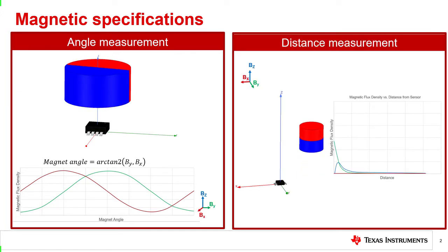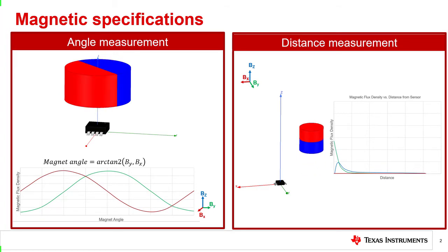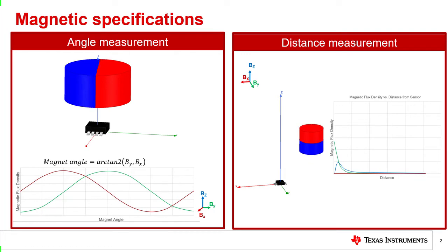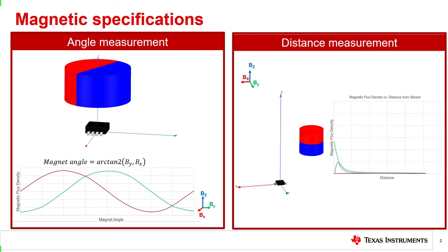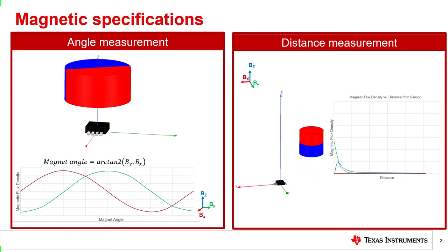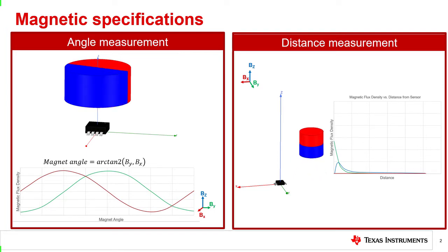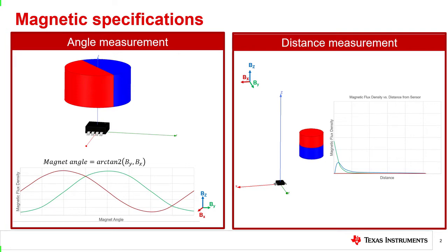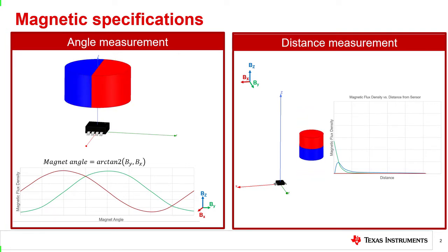For detecting distance, axially magnetized cylinder magnets are commonly used. As the distance with respect to the sensor increases, the sensed magnetic flux density decreases as shown on the right. The arctan2 function can be used for some distance measurement applications as well. The specifications of the Hall sensor will determine the accuracy of the angle and distance measurement. This video covers how the specifications of a 3D Hall sensor affect these angle and distance measurements.